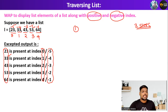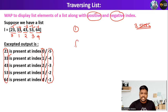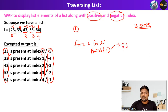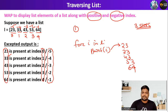First, we have a list L equal to 23, 33, 43, 53, 64. Simply, if you want to display all the elements, you write: for i in L, print i. We completed this in the previous video. If you run this, it will display 23, 33, 43, 53, and 64. This is the first step completed.